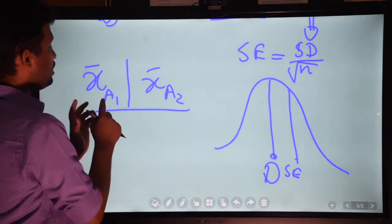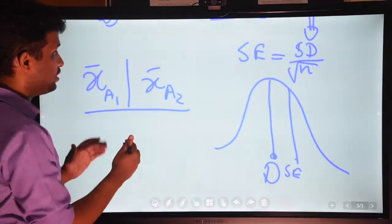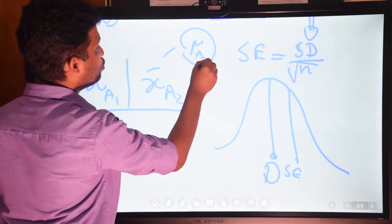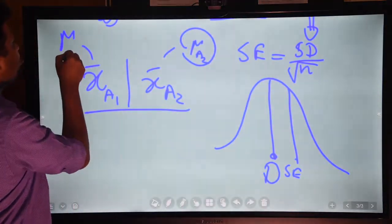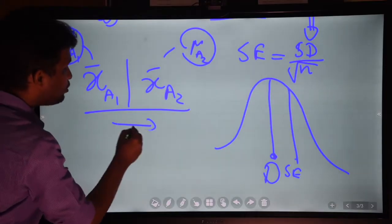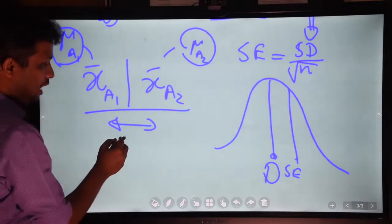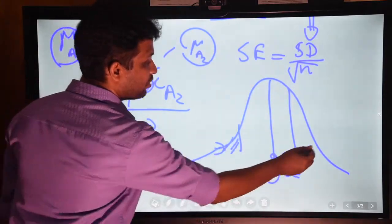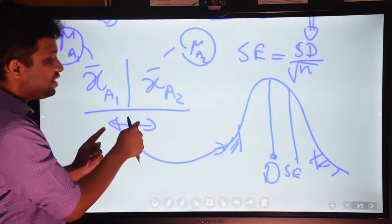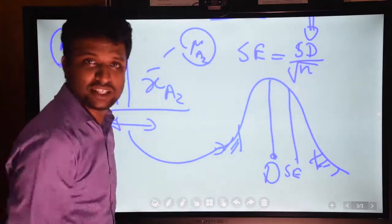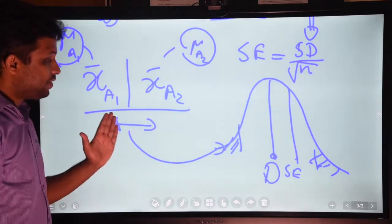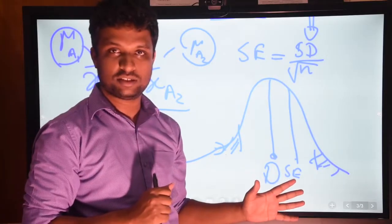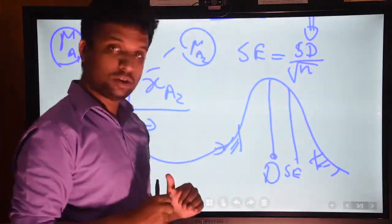The observed difference is x-bar A1 minus x-bar A2 — the difference between the sample means of the two occasions. If the difference between these two sample means falls in the rejection region of the sampling distribution, we reject the null hypothesis. If the difference falls in the null region, we cannot reject the null hypothesis.